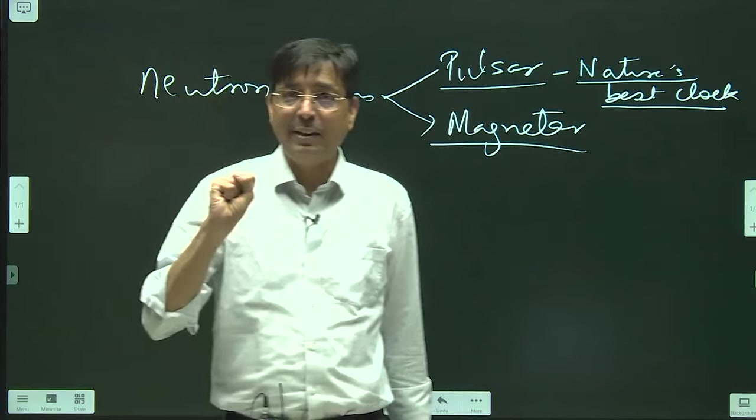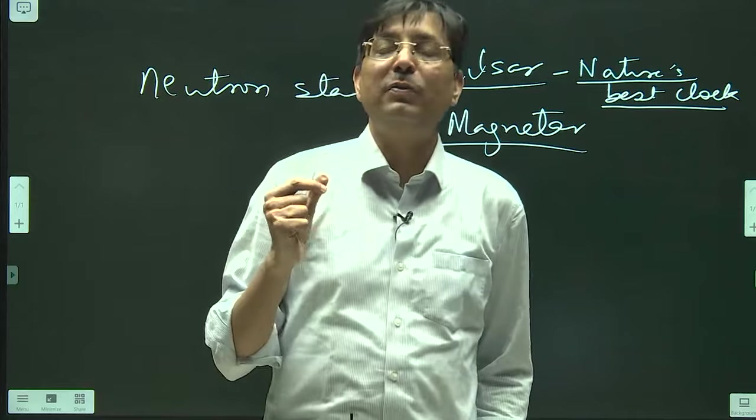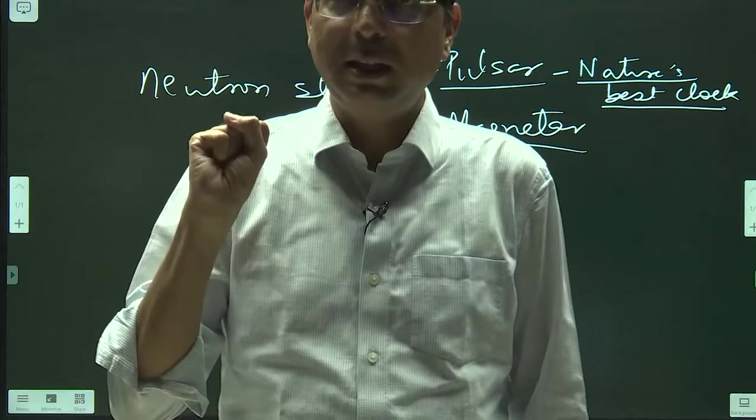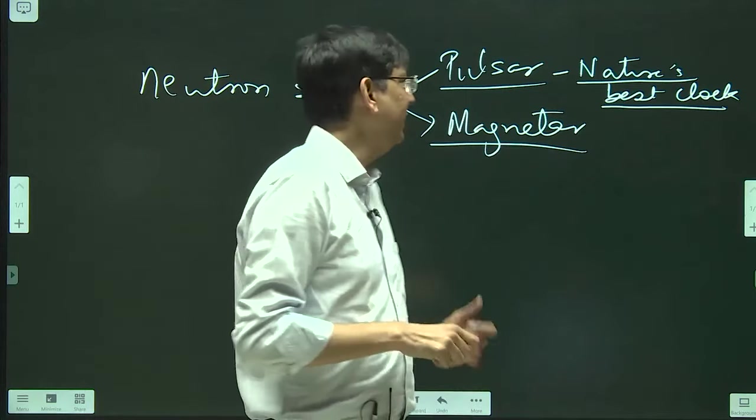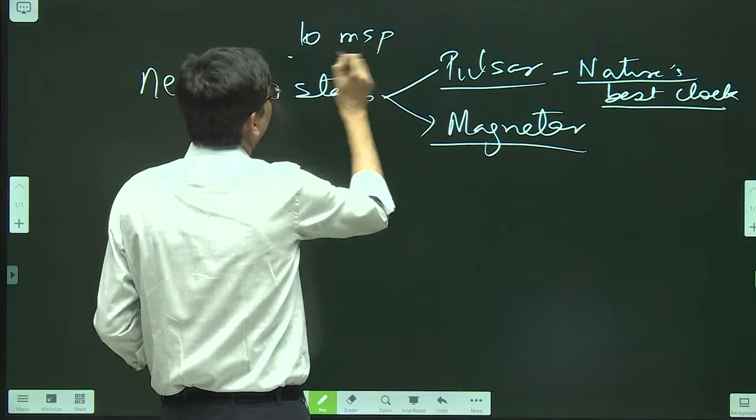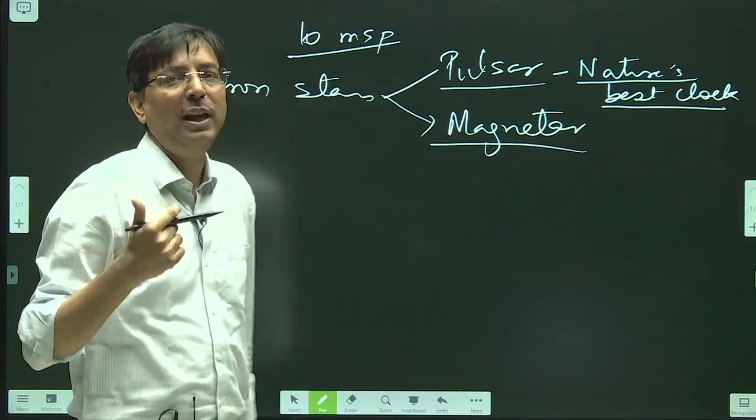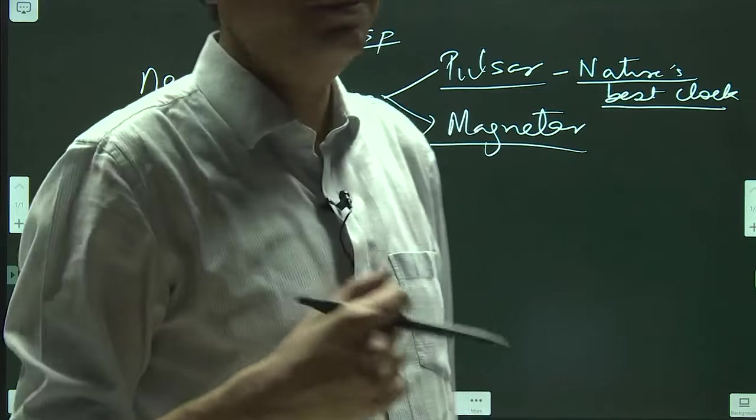Like that lighthouse on the seashore or which we call as beacon. If it is say a 10 millisecond pulsar, it will always have burst of light coming after 10 milliseconds. That is why they are called as Nature's Best Clocks.